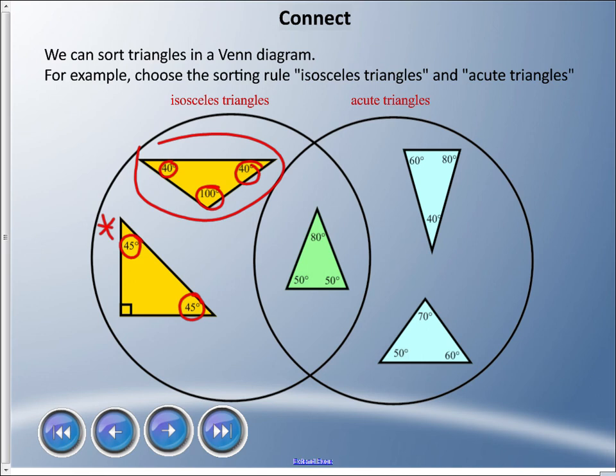In the middle though, this guy here, it is both an isosceles triangle - and we know because these two angles are the same in the corners, and if it was a different, you know, we have some hatch marks maybe that would help us out too - but yet it's also an acute triangle because all of the angles are less than 90 degrees.